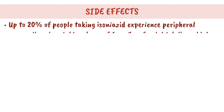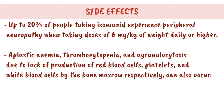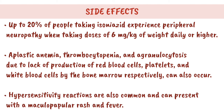Side Effects: Up to 20% of people taking isoniazid experience peripheral neuropathy when taking doses of 6 mg/kg of body weight daily or higher. Aplastic anemia, thrombocytopenia, and agranulocytosis — due to lack of production of red blood cells, platelets, and white blood cells by the bone marrow respectively — can also occur.